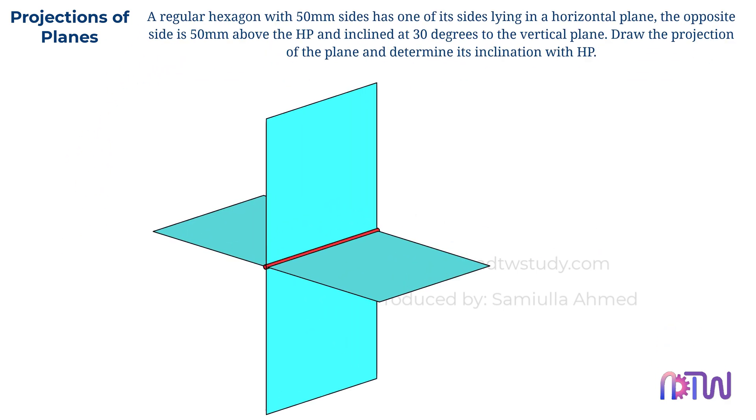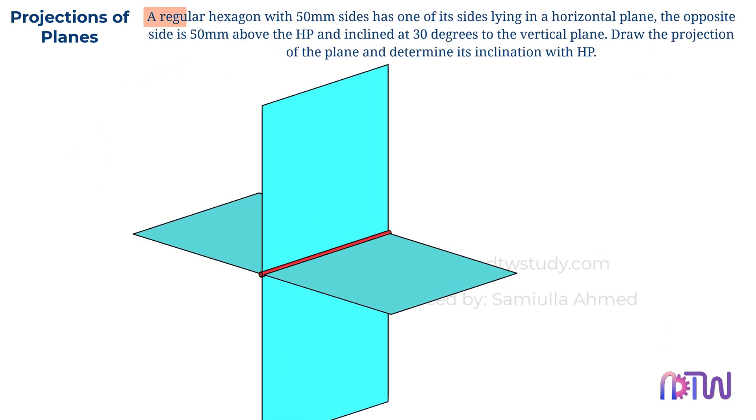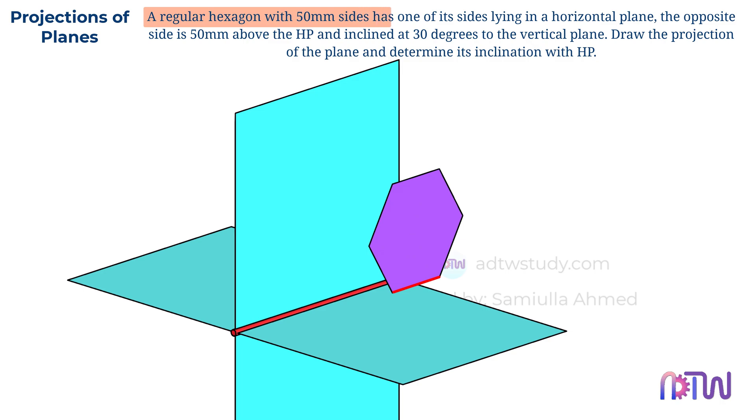Let's understand the question in a three-dimensional view. A regular hexagon with a 50mm side has one of its sides lying on the horizontal plane. We can see how one of the hexagon's sides rests on the HP.